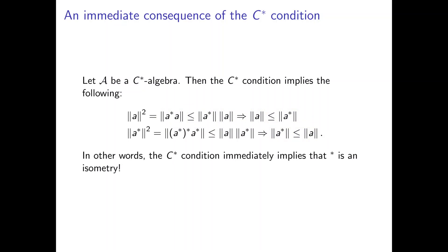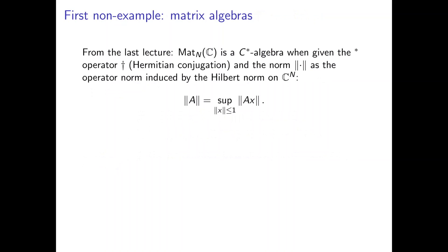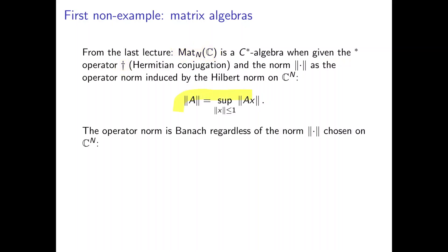Let's look at some examples where this is not the case. The first non-example is that of matrix algebras. From the last lecture, we looked at the algebra of complex n-by-n matrices, which is a C-star algebra when we give the star operator as Hermitian conjugation (denoted by the dagger symbol) and the norm as the operator norm induced by the Hilbert norm on ℂⁿ. This induced operator norm is a Banach norm regardless of which norm we choose on ℂⁿ.